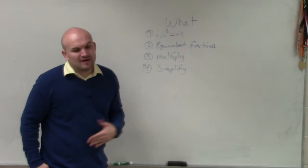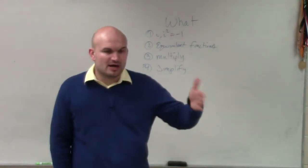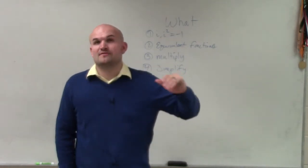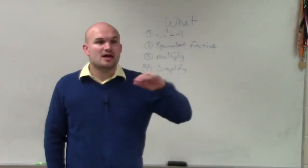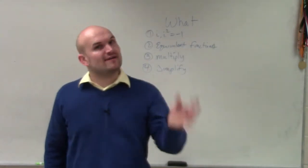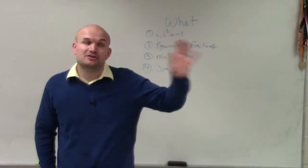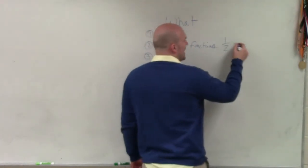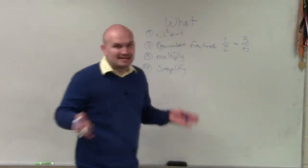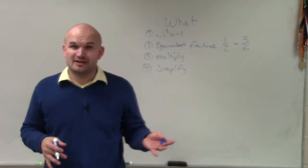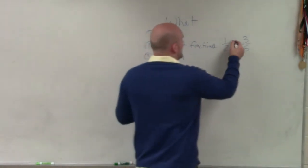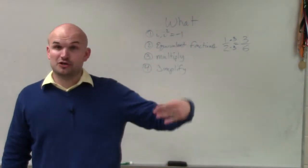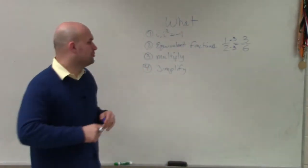The next thing is producing equivalent fractions. When simplifying complex numbers, it's very important to be able to use not only the conjugate, or if we're multiplying by i to get i squared in the denominator — whatever we multiply in the denominator, we have to multiply in the numerator to produce equivalent fractions. For example, 1 half and 3 sixths are the exact same value. All I did was multiply by 3 over 3. As long as you multiply the same number in the denominator and the numerator, you'll produce equivalent fractions.